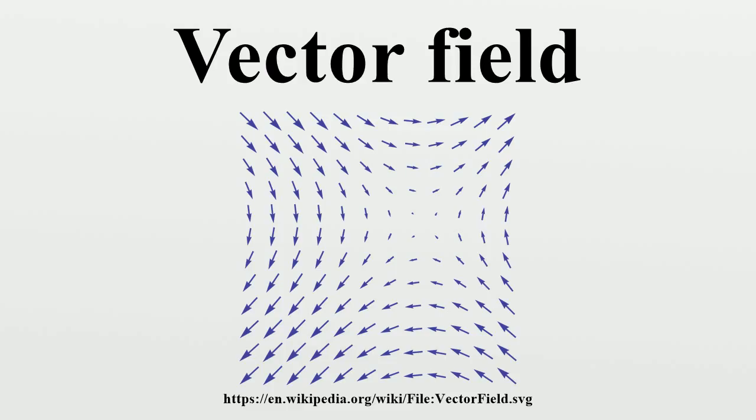Vector fields are often used to model, for example, the speed and direction of a moving fluid throughout space, or the strength and direction of some force, such as the magnetic or gravitational force, as it changes from point to point.